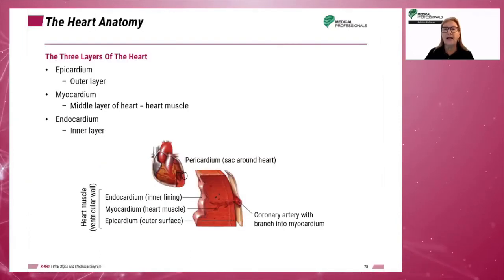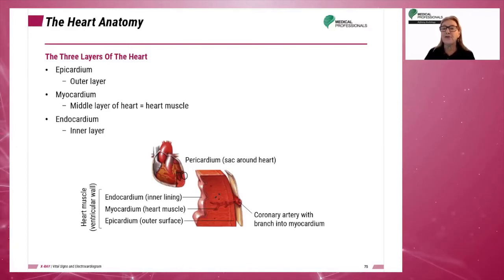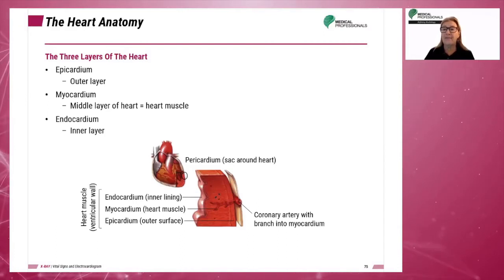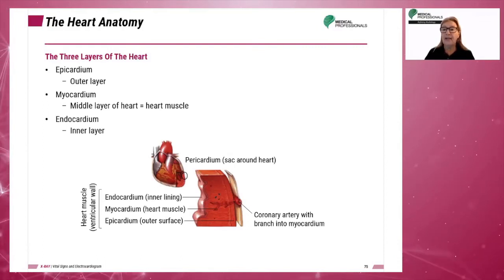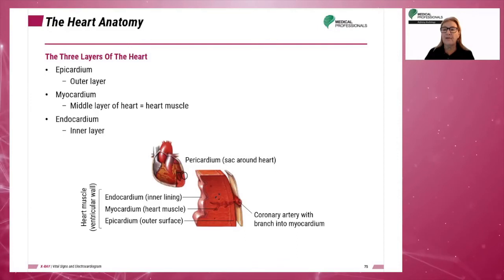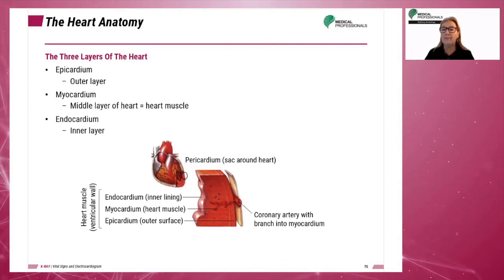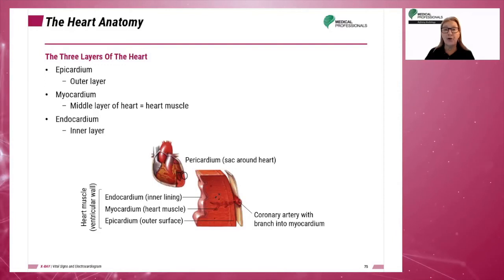The heart carries out a well-synchronized pumping action that distributes nutrient-rich blood throughout the body and sustains life. The beat is controlled mainly by electricity. The muscles of the heart are most affected by sodium, calcium, and potassium ions. The heart has three layers: the epicardium is the outermost layer, the myocardium is the middle muscular layer, and the inner layer is the endocardium. The coronary artery and its branches supply nutrients to the heart and its muscles.